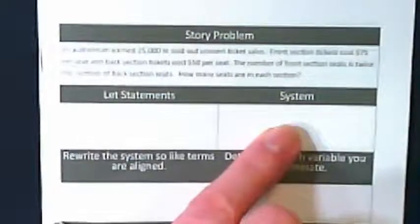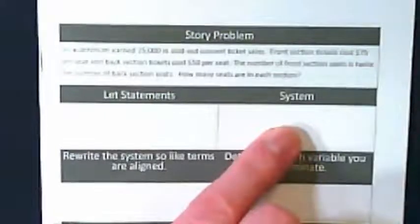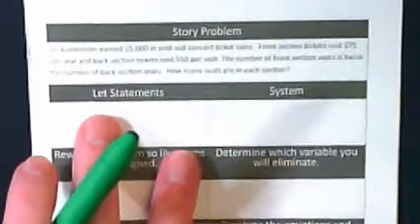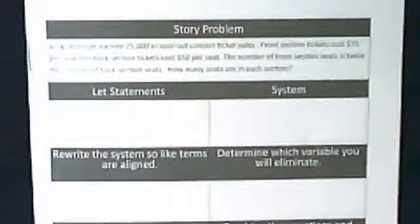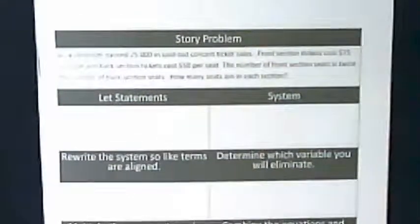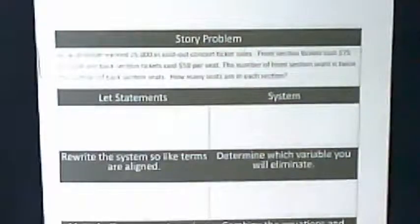So problem one reads: an auditorium earned $25,000 in sold out concert ticket sales. Front section tickets cost $75 per seat and back section tickets cost $50 per seat. The number of front section seats is twice the number of back section seats. How many seats are in each section?